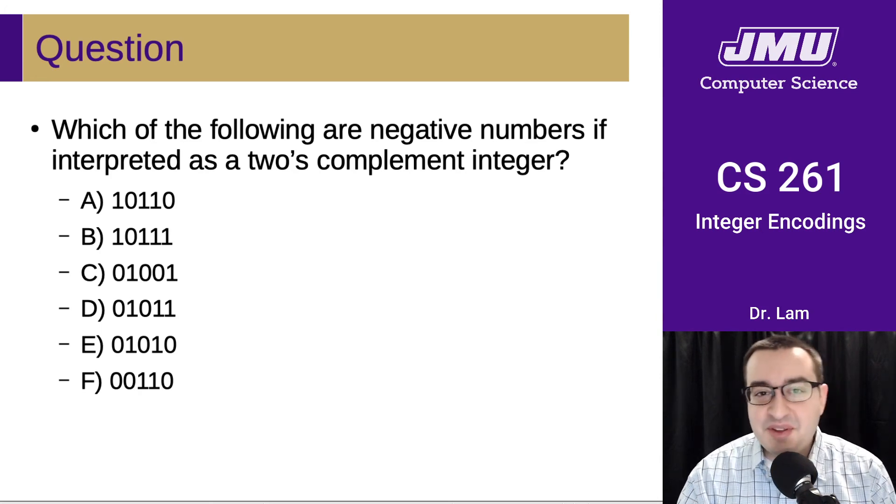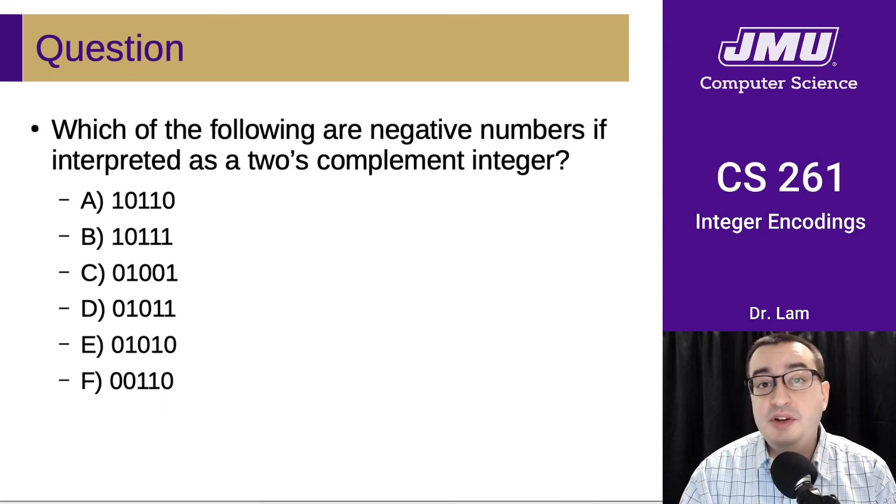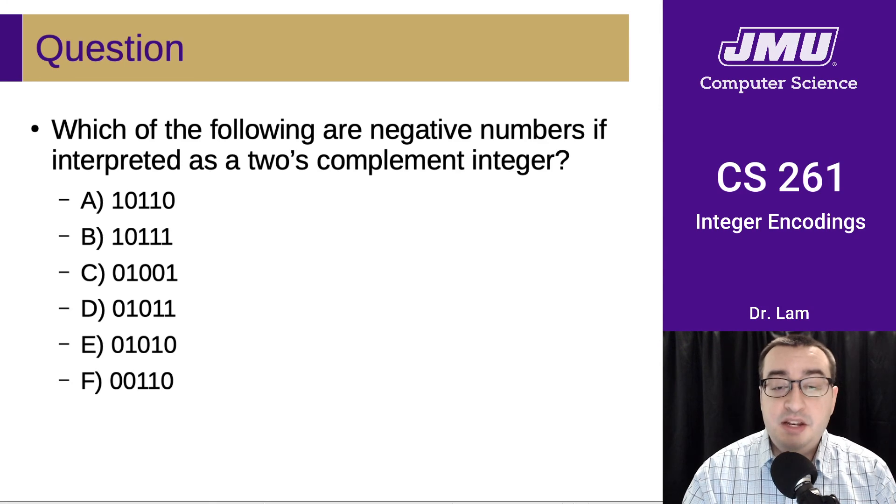And again, so for some students, this feels like a trick question, but it's not. So the rule is still the same. So all three of these signed representations have the same indicator of a negative number, which is that the most significant bit is set.